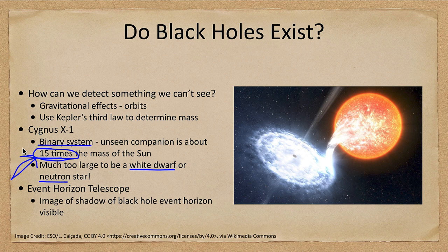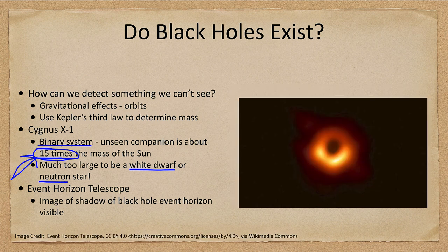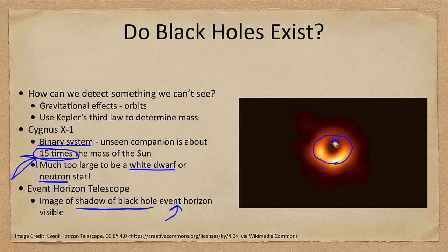We also have the Event Horizon Telescope, which has recently given us images of a black hole — not the black hole itself, but the shadow of the black hole's event horizon, which is how it gets its name. We can see the material around the black hole, but the event horizon is shadowed out. We've now been able to image that central portion around the black hole for several galaxies.